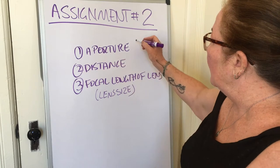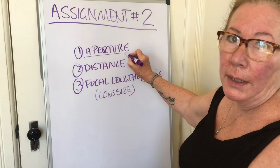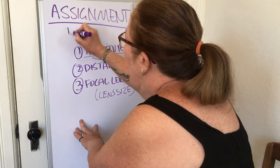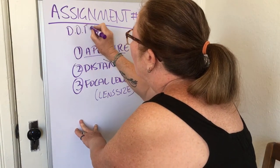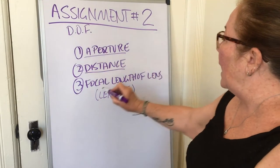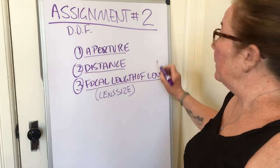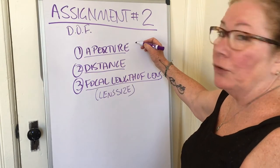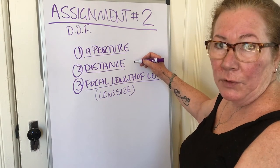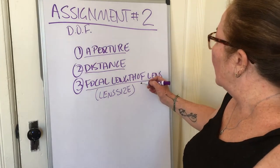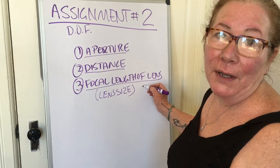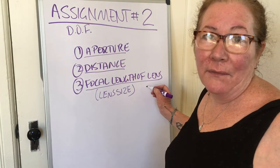Aperture is the number one control that affects your depth of field. The larger the aperture, the narrower the depth of field. The closer you are to your subject, the narrower the depth of field. And the longer the focal length of the lens, the narrower the depth of field.